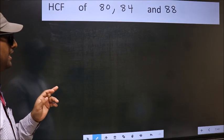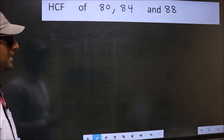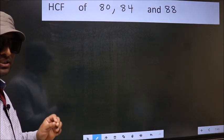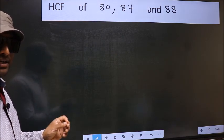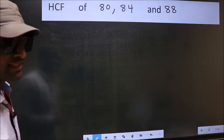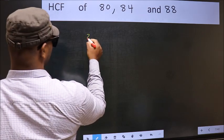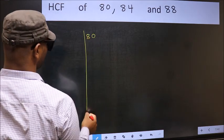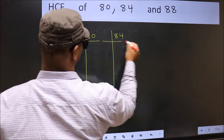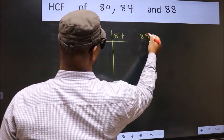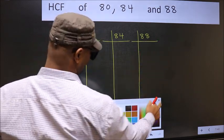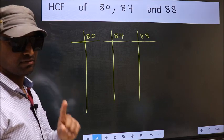HCF of 80, 84, and 88. To find the HCF, first we should do the prime factorization of each number separately. What I mean is 80, 84, 88. This is your step 1.